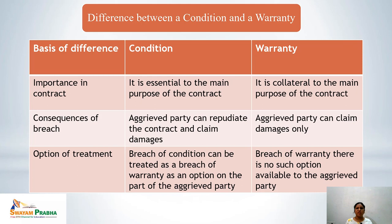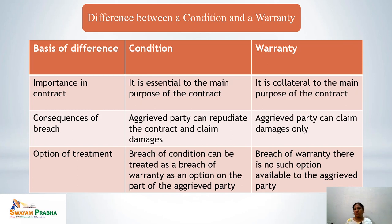The difference between condition and warranty: on the basis of importance in the contract, a condition is essential to the main purpose of the contract, whereas a warranty is collateral to the main purpose. On consequences of breach, breach of condition allows repudiation and claim for damages, whereas breach of warranty allows only a claim for damages. On option of treatment, breach of condition can be treated as a breach of warranty at the option of the aggrieved party, but breach of warranty has no such option.